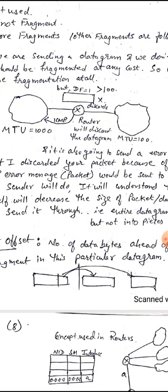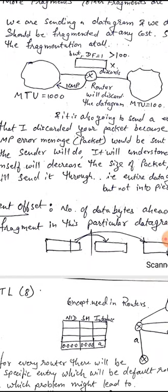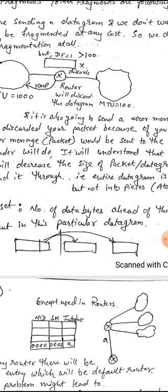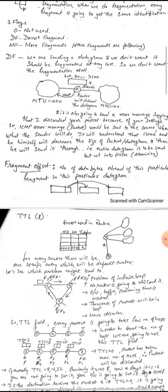The DF flag is used to control whether fragmentation is allowed. If the DF flag is set to 1 and a packet needs to be broken up — say into 10 fragments — but the underlying network has a smaller MTU, the packet will be discarded rather than fragmented. The router discards the datagram and sends an ICMP (Internet Control Message Protocol) packet back to the source. This is required when atomicity of the entire datagram must be maintained.